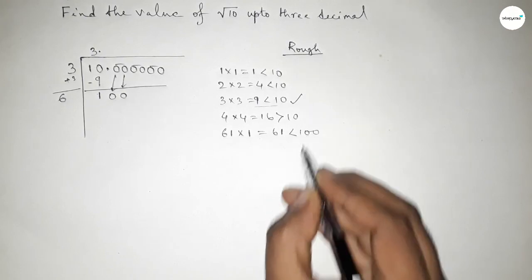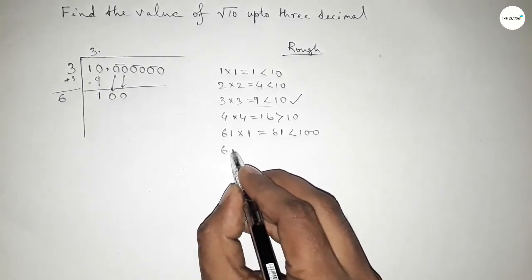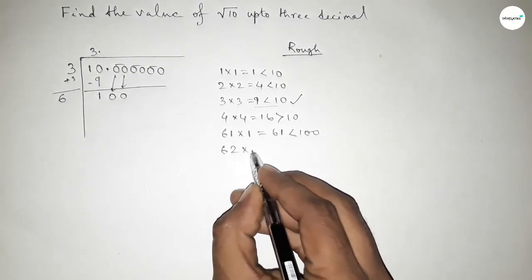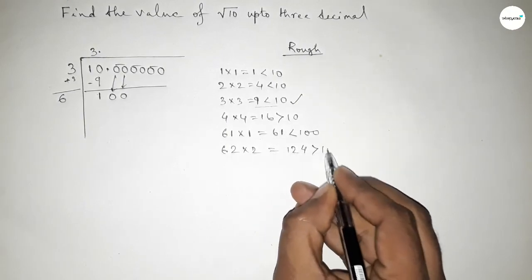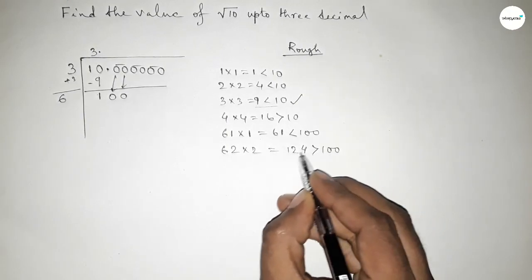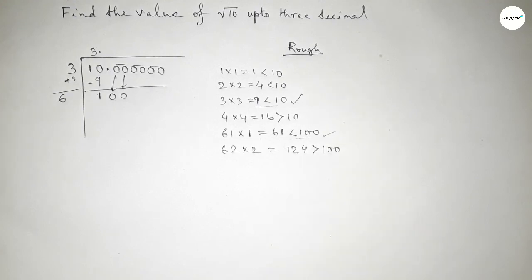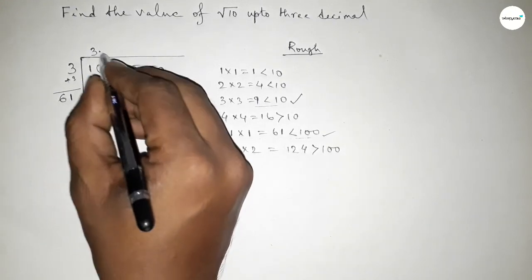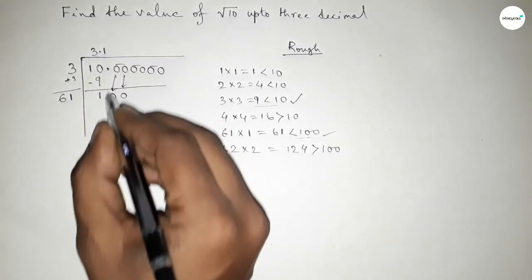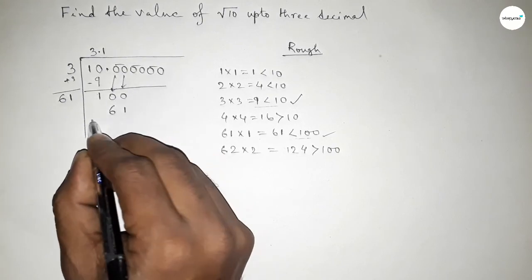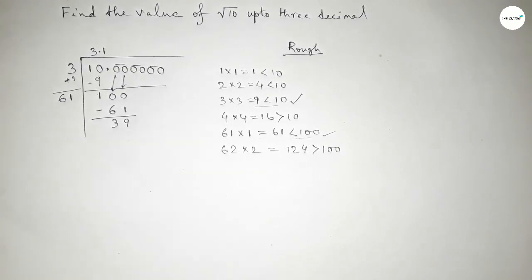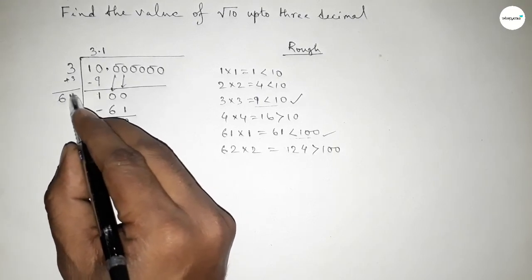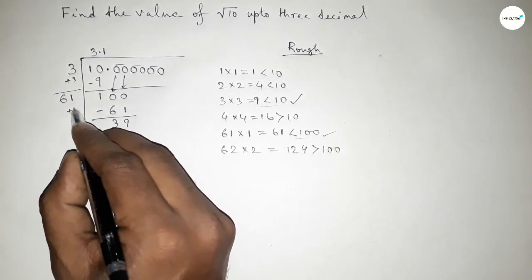Now what should we put here beside 6, multiplying by that number which is less than 100. If you put 2 and multiply by 2, that gives 124 — greater than 100. So we should take 1 here, putting 1 beside 6 to make 61. 61 times 1 equals 61.